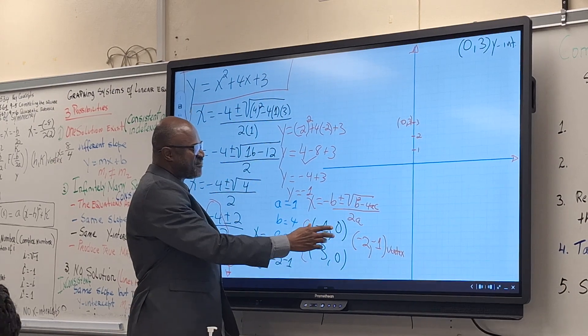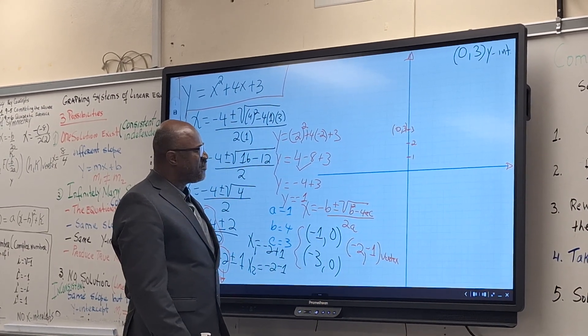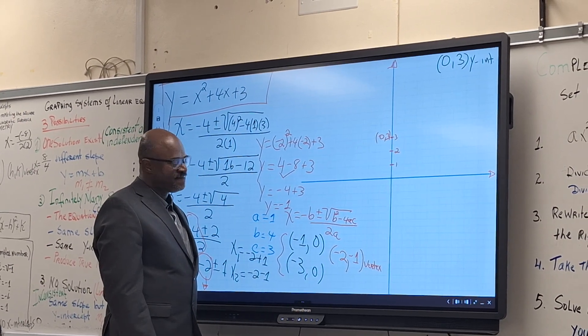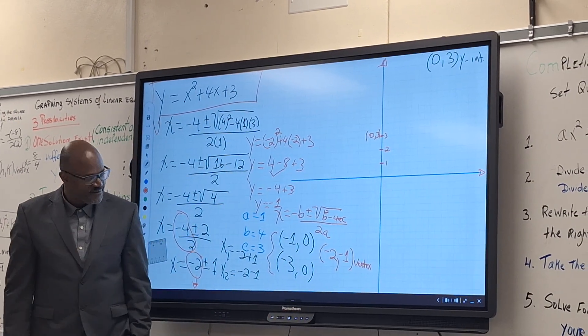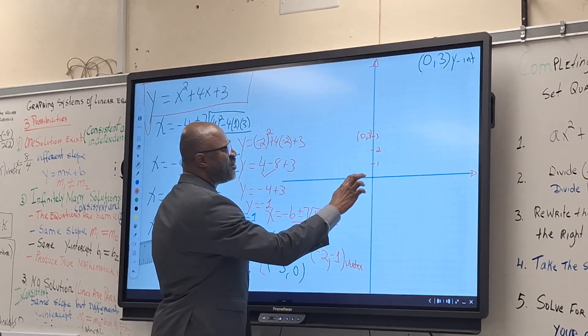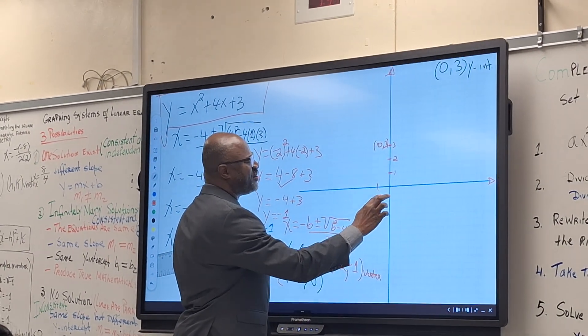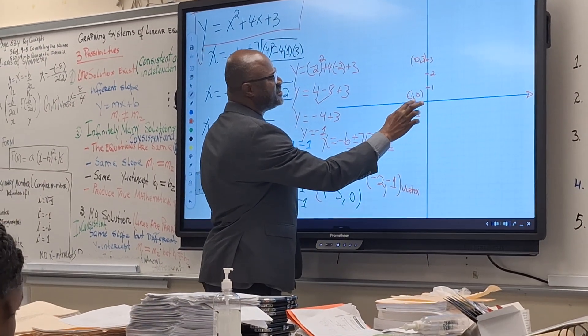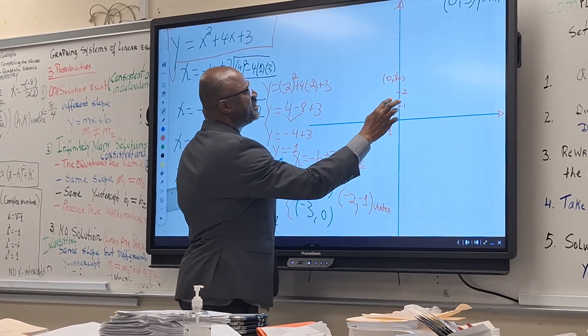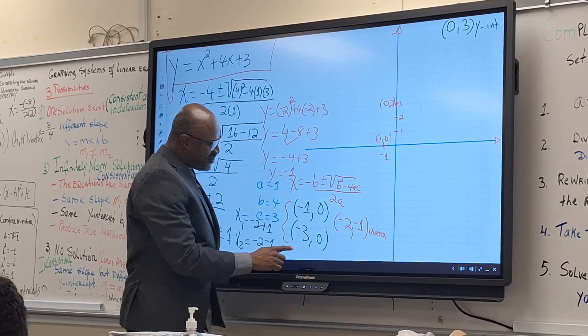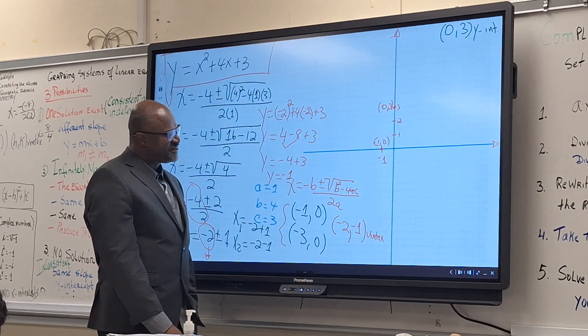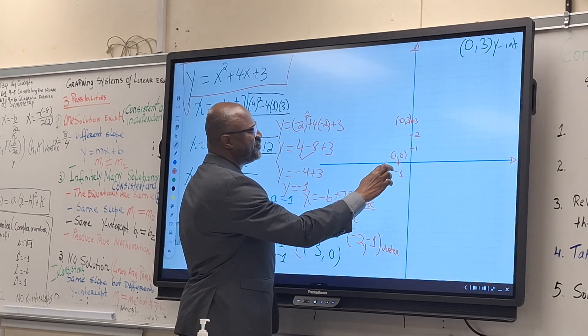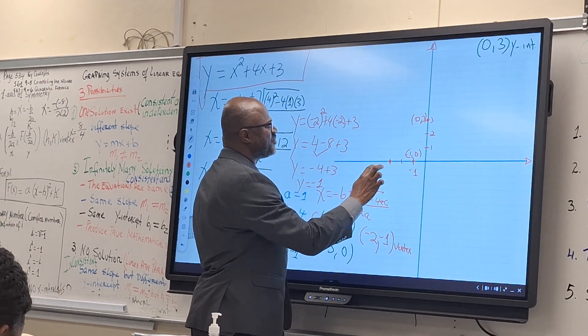Now we have x-intercept, which is negative one zero. Where will you put that? Negative one zero. What direction do you go? To the left, how many units? One unit. That would be negative one. That would be negative one zero. This is one point, this is our y-intercept. And the other point is negative three zero. You go how many units to the left? Three. That would be negative three. That's the other one.